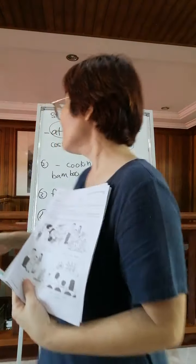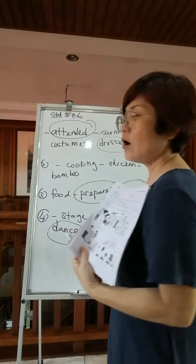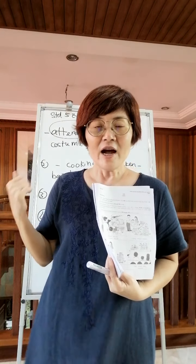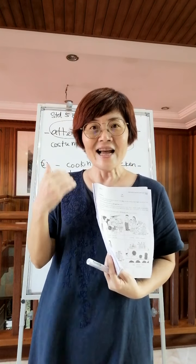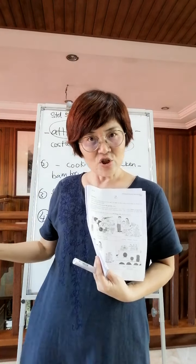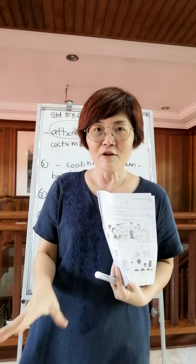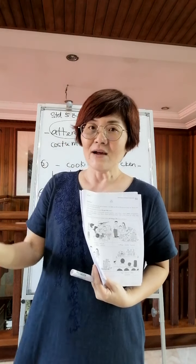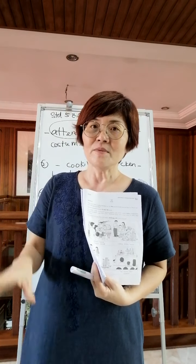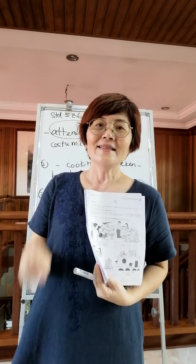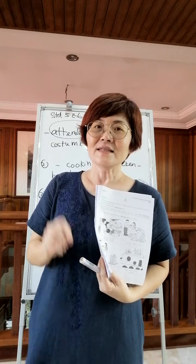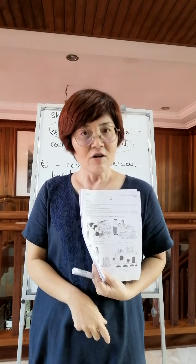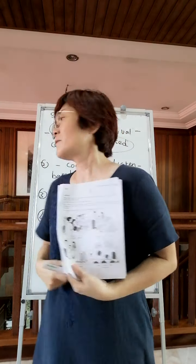First, you have to circle all the verbs. After circling the verbs, put I, you, we, they, he, she, it in front of them. Then go to the noun — noun means 名詞 — and put 'a' and 'the' in front of the nouns.